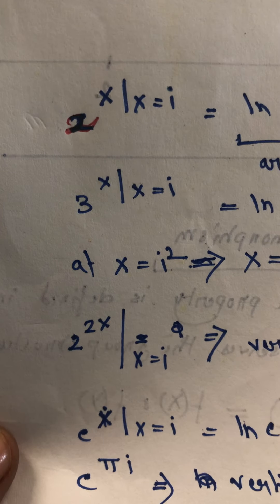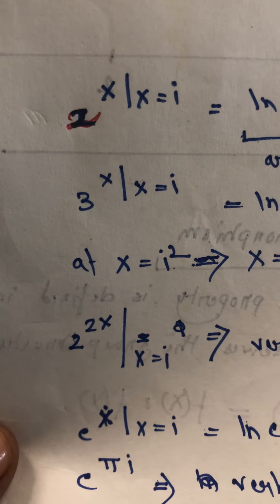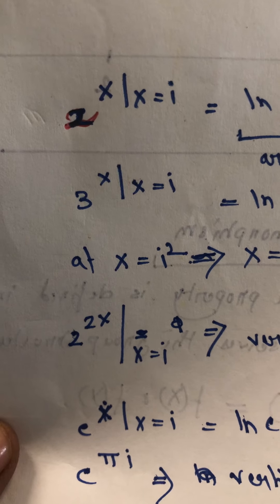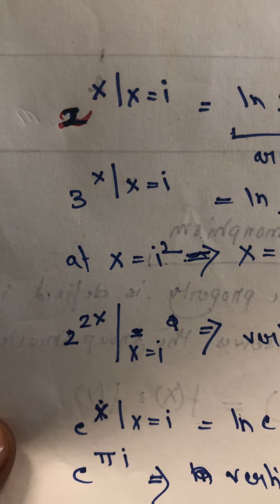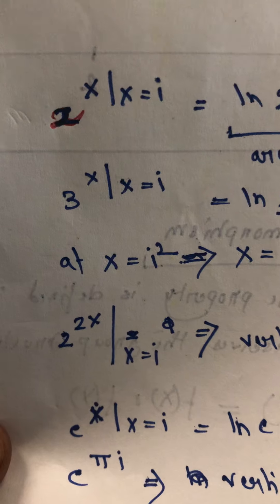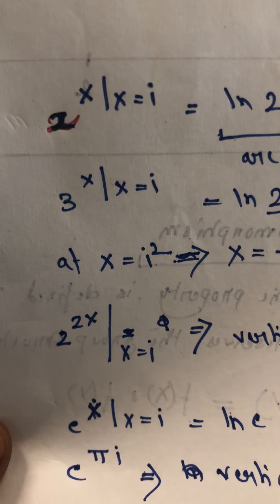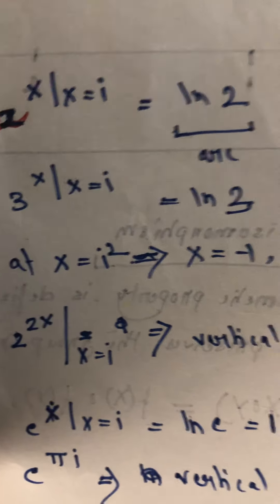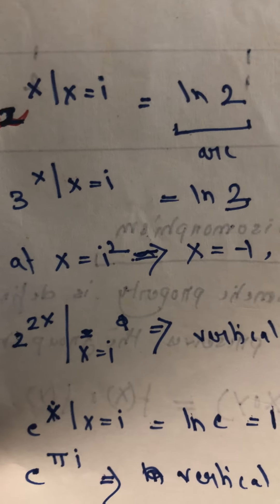So if in place of x equal to i, I put x equal to i squared, and i squared is minus 1, so that becomes 2 to the power minus 1. The base in this case I am assuming to be 2. So 2 to the power minus 1 is one half. That means the output I am getting is some sort of a movement along the horizontal plane.